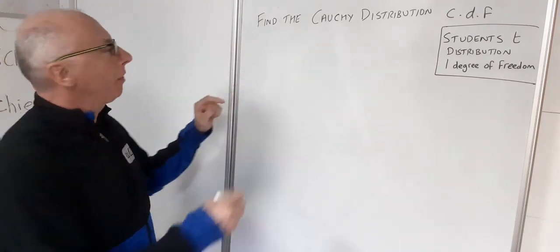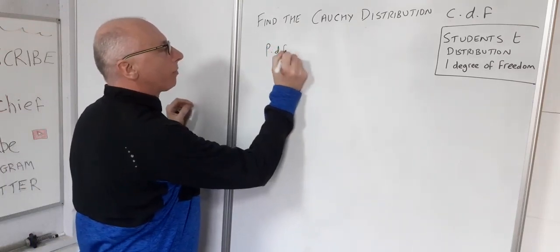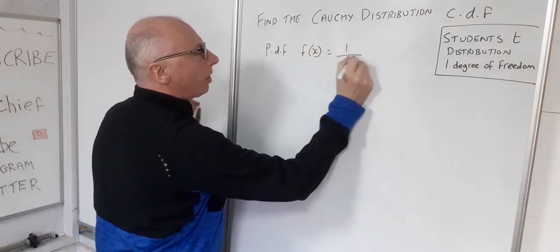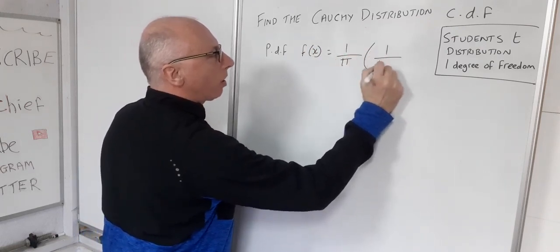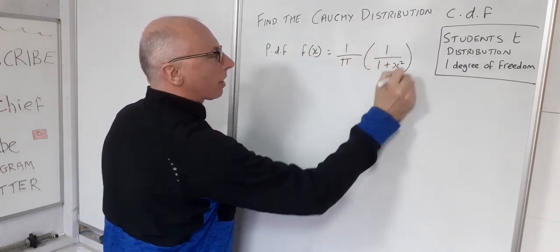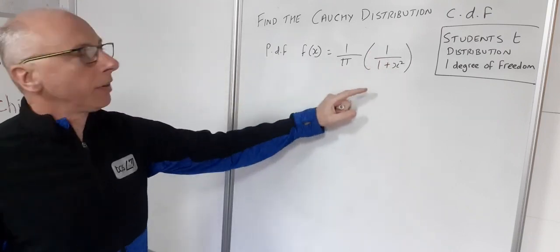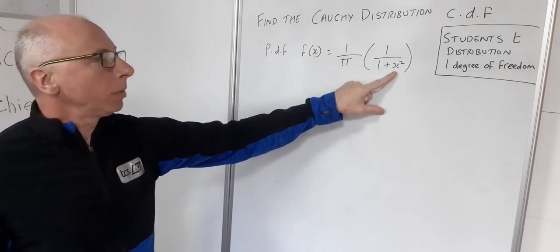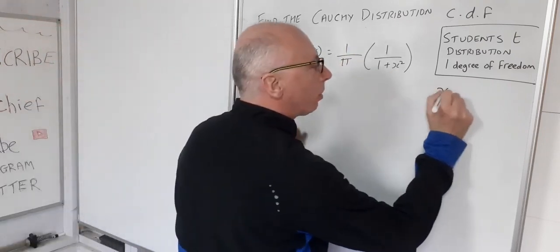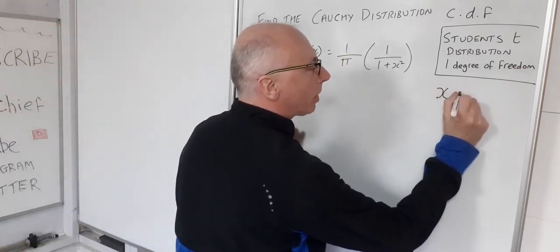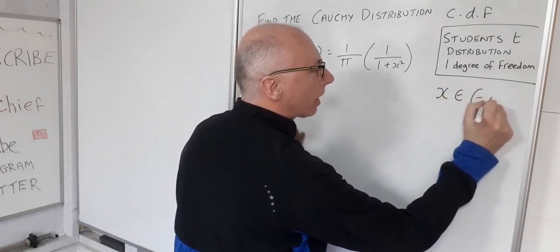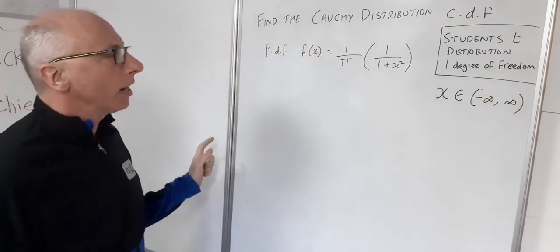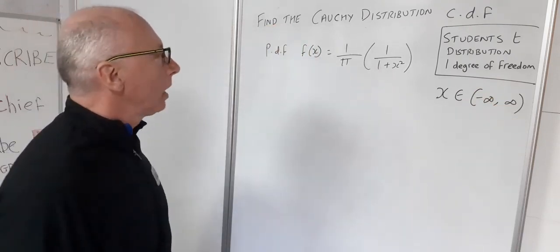The PDF of the Cauchy distribution, f(x), is 1 over pi times 1 over 1 plus x squared. That was its PDF for the Cauchy distribution. Now x is our random variable and x was all the real numbers, so it was in a range of negative infinity to infinity. So any value of number that you'd like to put into here for its PDF.